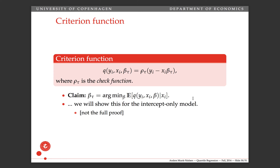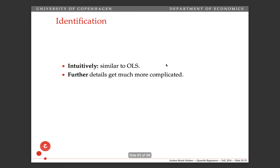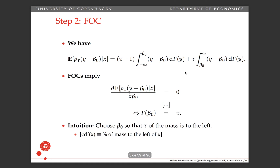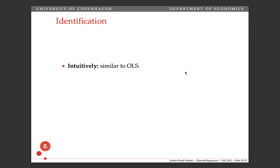I didn't talk much about identification here because much of the discussion is similar to OLS. For example, you cannot include the same variable twice, and you cannot include two intercepts — you cannot identify those separately. The arguments go along exactly the same lines as in OLS, except that instead of working with a squared difference, we're working with the check function of the distance. For the median, this is just the absolute residual. There are no extra concerns similar to probit where we couldn't identify the variance of the unobserved error term.